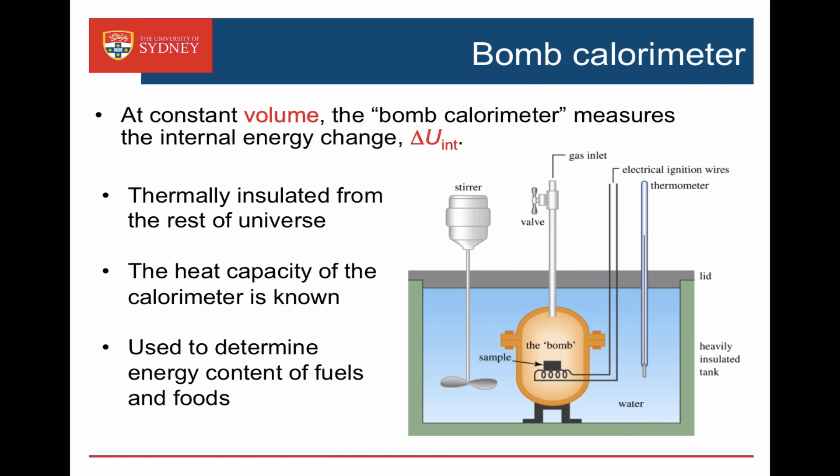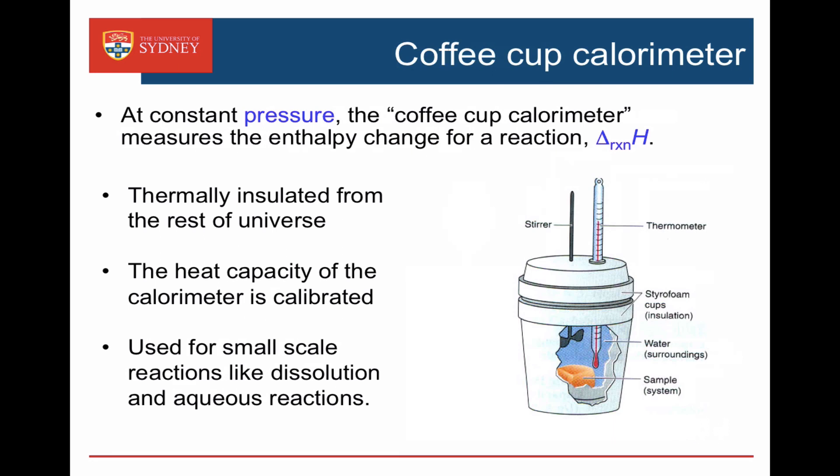On a large scale, if we want to determine the energy content of a fuel or food, we use a bomb calorimeter. This is a large amount of water with the reaction occurring at the center. It's very well insulated, so all the energy from the reaction heats up the water. The temperature rise enables us to work out the energy change. Because it's a sealed device at constant volume, the heat change measured is the internal energy change for the reaction.